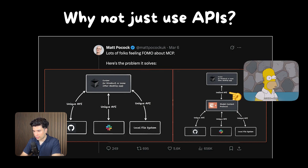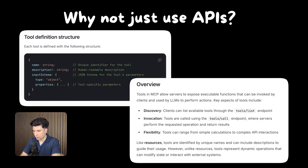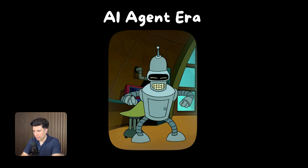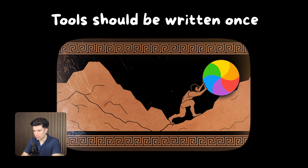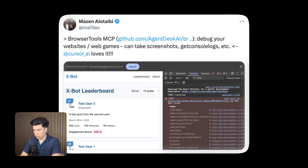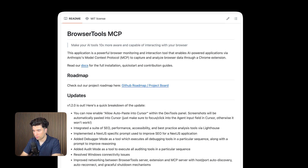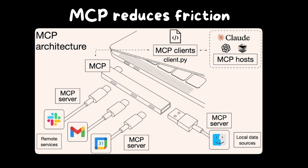An MCP server also broadcasts a set of offered tools for agent LLMs, including textual descriptions and parameter descriptions. We're entering the age of agents in AI, and everyone building an agent system is realizing that implementing tools for agents is redundant work. Otherwise, every team working on agents with a web browser use case would have to reinvent the wheel and re-implement basic tools like clicking, typing, finding UI elements, controls, and so on. So MCP steps in as the universal translator, dramatically reducing this friction.